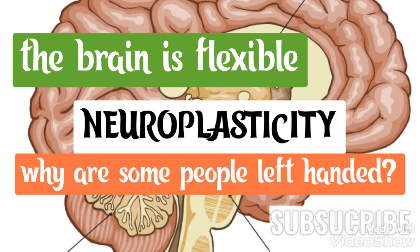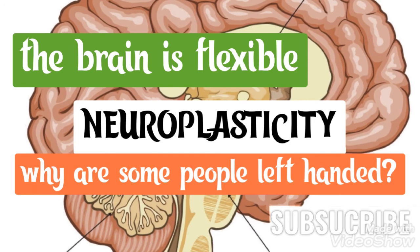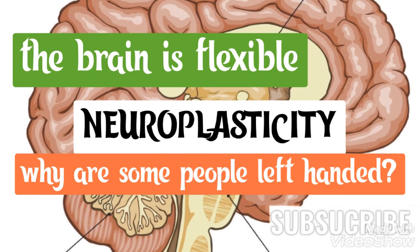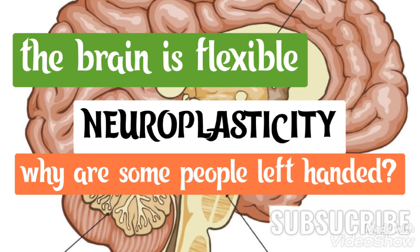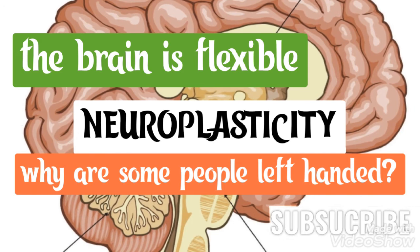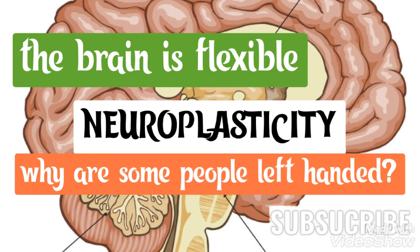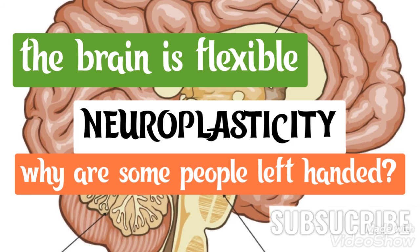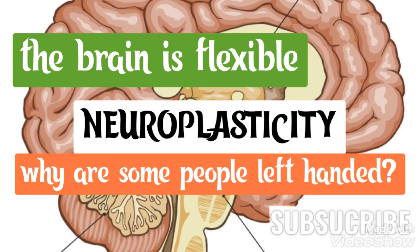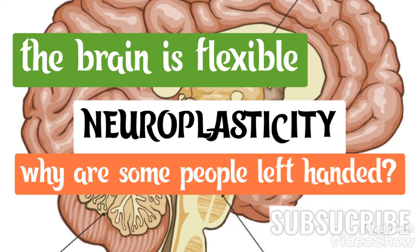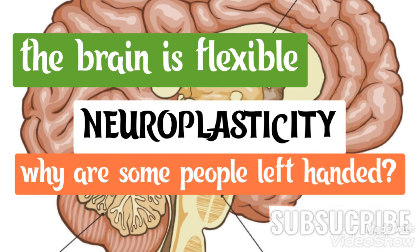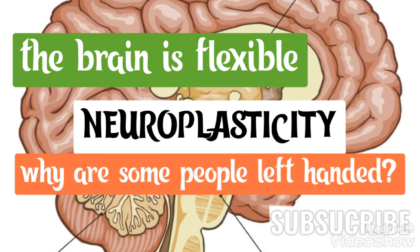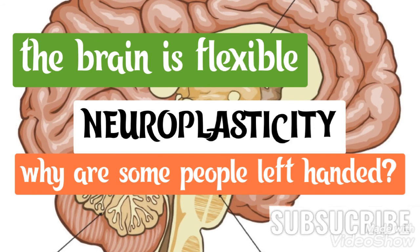There are both advantages and disadvantages to being left-handed in a world where most people are right-handed. One problem for lefties is that the world is designed for right-handers — automatic teller machines, classroom desks, scissors, microscopes, drill presses, and table saws are just some examples of everyday machinery designed with the most important controls on the right side.